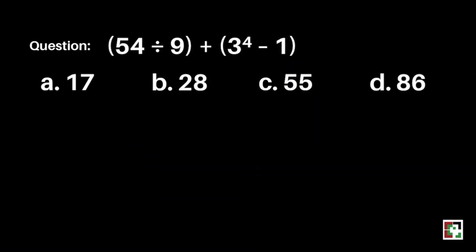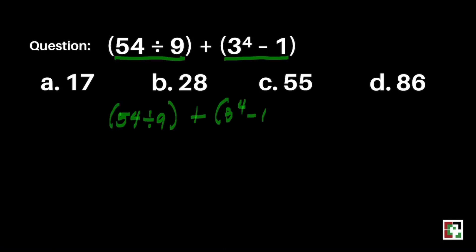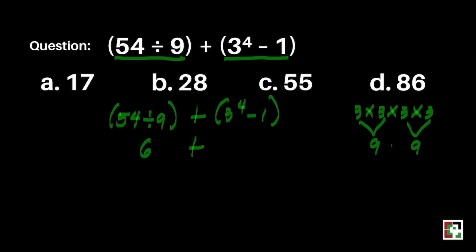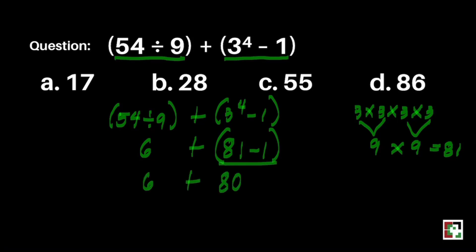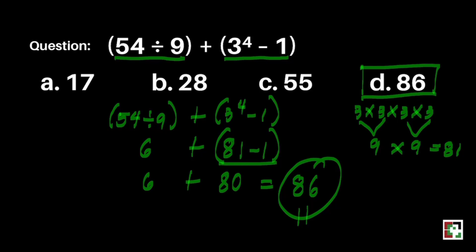Next question: the quantity of 54 divided by 9, plus the quantity of 3 to the 4th power minus 1. Is it A) 17, B) 28, C) 55, or D) 86? We have two groupings here. 54 divided by 9 is 6. For 3 to the 4th power: 3 times 3 is 9, times 9 is 81. Then 81 minus 1 is 80. So 6 plus 80 is equal to 86. The final answer is letter D.